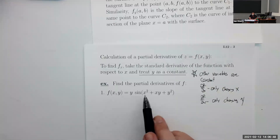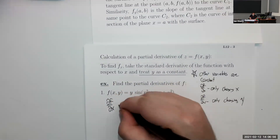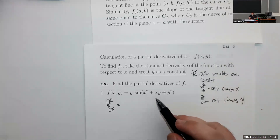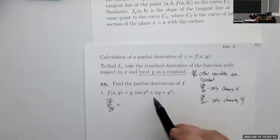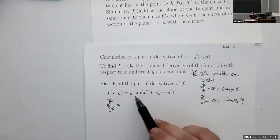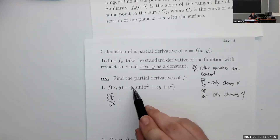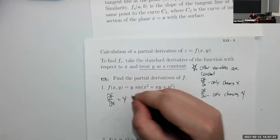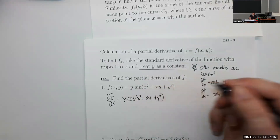Find the partial derivatives of f(x,y) = y·sin(x² + xy + y²). Let's start with partial f partial x. Any time we see a y, we treat it like a constant — imagine every y is just a number like 2. We do the Calc 1 derivative treating all y's as constants. We have the derivative of a constant times sine of something, which gives that constant times cosine of the same thing.